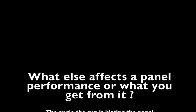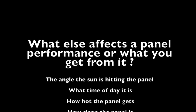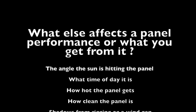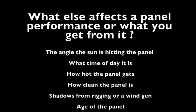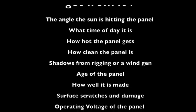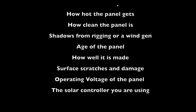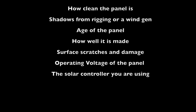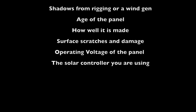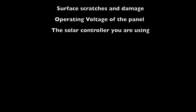So what else affects a panel's performance or what you can get from it? Well, there's a few things. There's the angle of the sun as it's hitting the panel, what time of day it is, how hot the panel gets, how clean the panel is, and of course shadows from rigging or a wind generator, the age of the panel if they're not new, how well the panel's made, fabricated or constructed, surface scratches and damage, the operating voltage of the panel, and also the solar controller that you're going to be using. All of these are important. Let's cover a few of those now.